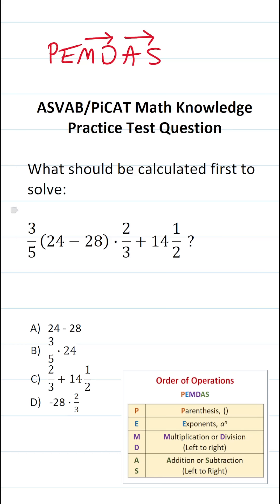So with the order of operations in mind, let's take a look at this question one more time. We have three fifths times, so that's multiplication, 24 minus 28 in parentheses. As I just mentioned, you're always going to work out what's in parentheses first. So in order to solve this one, the first thing we're going to calculate is 24 minus 28.